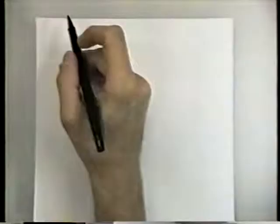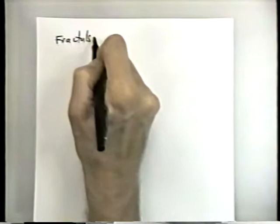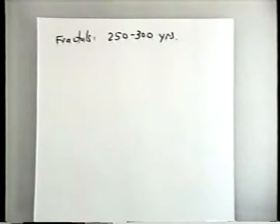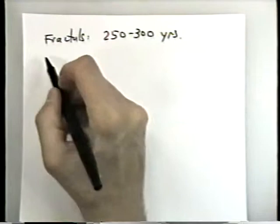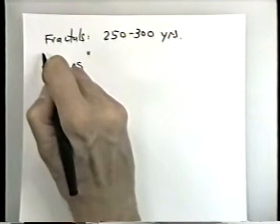In terms of fractals, we said that properties related to fractal statistics go back about 200 to 300 years, to one of the Bernoullis. To give you a sense of what we're going to talk about today, the jargon word for this is chaos.